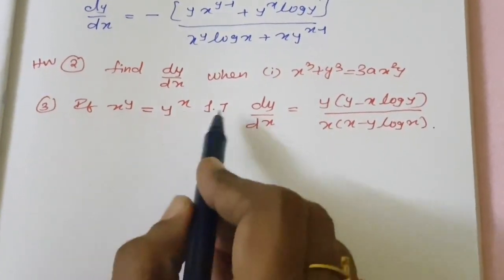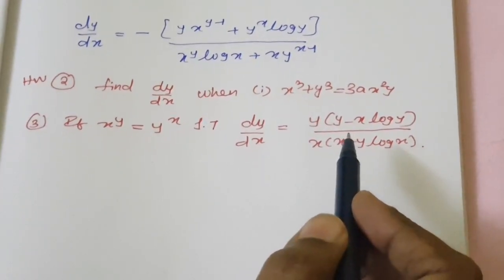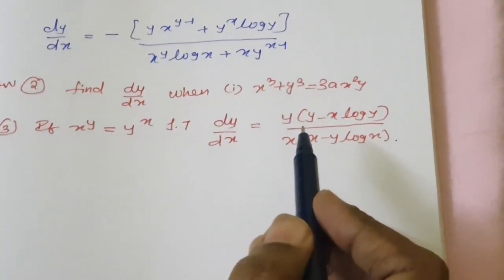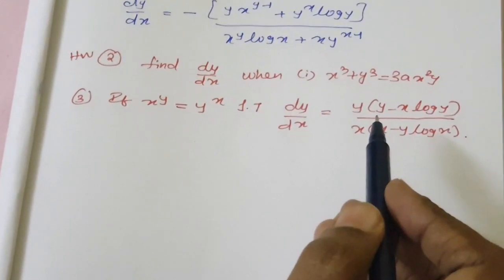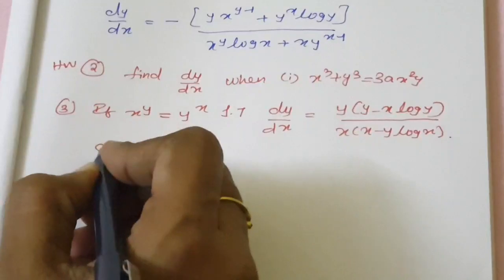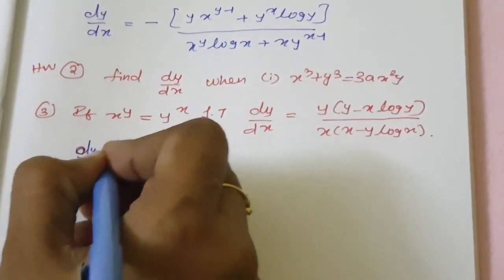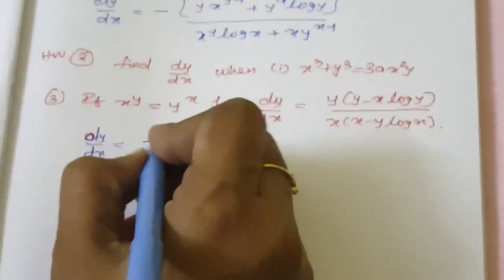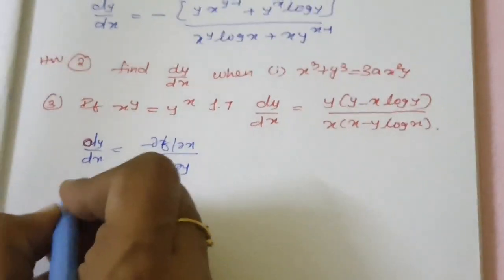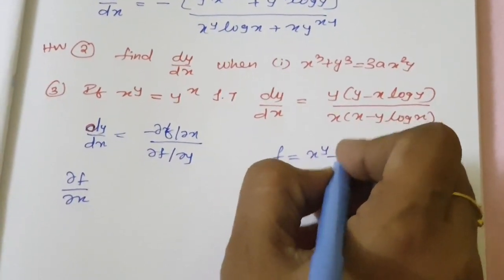If x power y equals y power x, show that dy by dx equals the right-hand side expression. This type of problem involving x power y and y power x can feel a bit complicated. As usual, dy by dx equals minus ∂f by ∂x divided by ∂f by ∂y, where f equals x power y minus y power x.